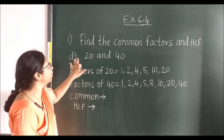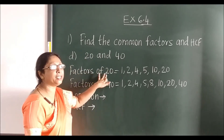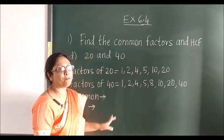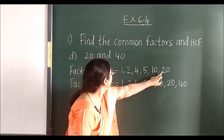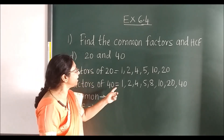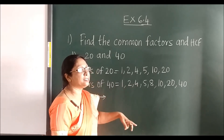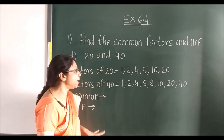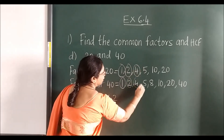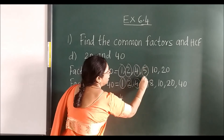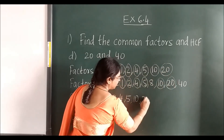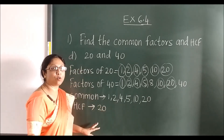Now the final sum — 20 and 40. Factors of 20: 1, 2, 4, 5, 10, 20. Factors of 40: 1, 2, 4, 5, 8, 10, 20, 40. After finding the factors, circle the common ones: 1, 2, 4, 5, 10, 20. The highest common factor is 20, so HCF is 20.